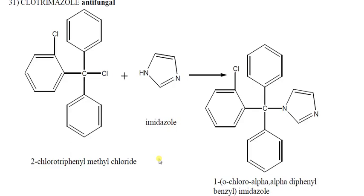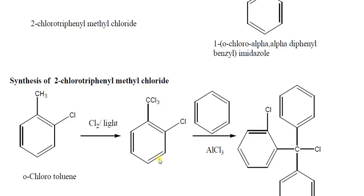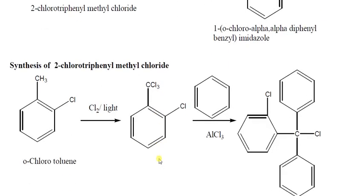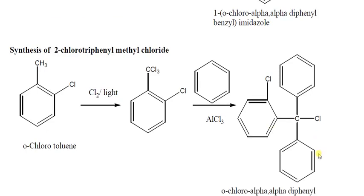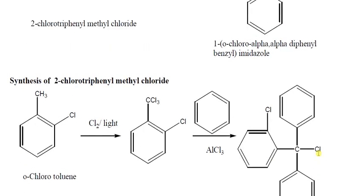The intermediate 2-chlorotriphenylmethyl chloride is synthesized by using ortho-chlorotoluene, passing it through light (photochlorination) to give 1-chloro-2-trichloromethylbenzene. This intermediate further reacts in the presence of benzene and AlCl3 (a Lewis acid) to form 2-chlorotriphenylmethyl chloride.